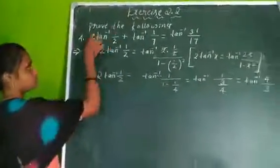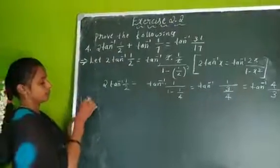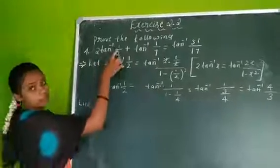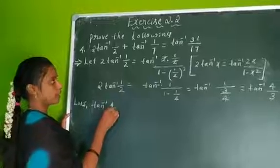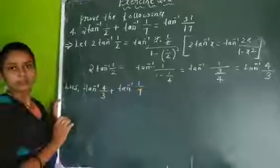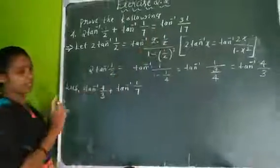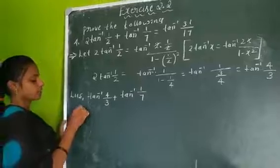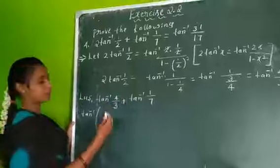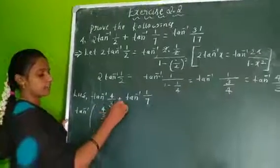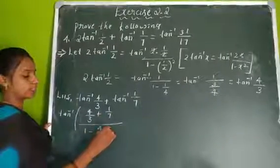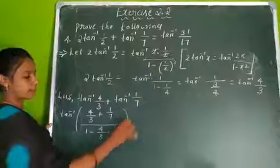Now the LHS becomes tan inverse (4/3) + tan inverse (1/7). Apply the addition property: tan inverse [(4/3 + 1/7) / (1 − (4/3)(1/7))]. The numerator: LCM is 21, so (7×4 + 1×3)/21 = (28 + 3)/21 = 31/21. The denominator: LCM is 21, so (21 − 4)/21 = 17/21.